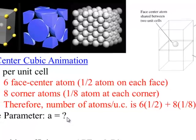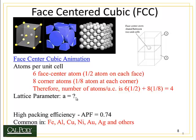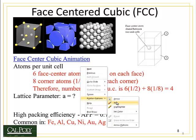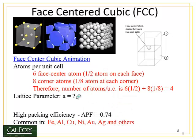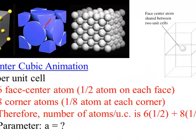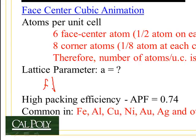So what's the lattice parameter for this cubic structure? The way we want to solve this problem is to first look and determine where the atoms touch each other. They touch each other along the face diagonal. That face diagonal is equal to four atomic radii.